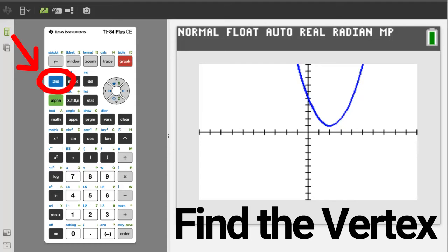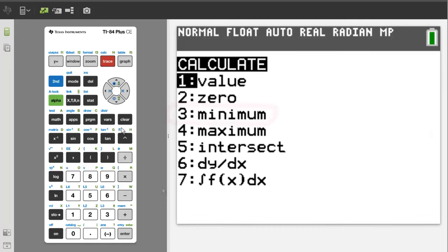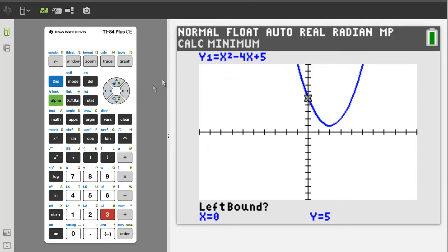To find the vertex, press the second button, then the trace button. We want number 3, minimum. So press the 3 button. To get the minimum, we have to use the arrow buttons to move the blinking cursor just to the left where we think the minimum is. Now press the enter button.